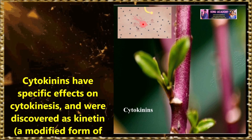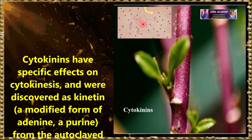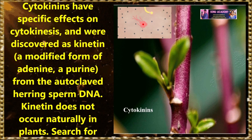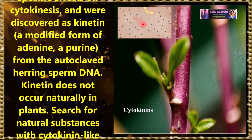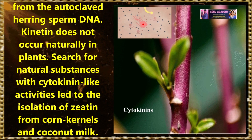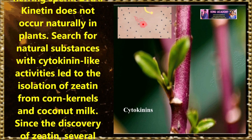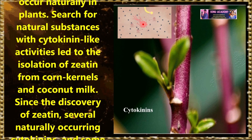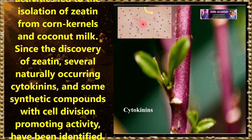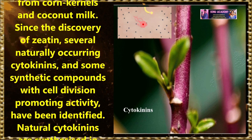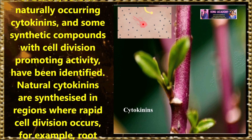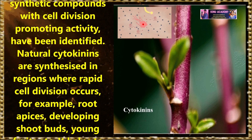Cytokinins were discovered with specific effects on cytokinesis. Kinetin was discovered from herring sperm DNA. Kinetin does not occur naturally in plants. The search for natural substances with kinetin-like activities led to the isolation of zeatin from corn, kernel, and coconut milk. Since the discovery of zeatin, several naturally occurring cytokinins and some synthetic compounds with cell division promoting activity have been identified.